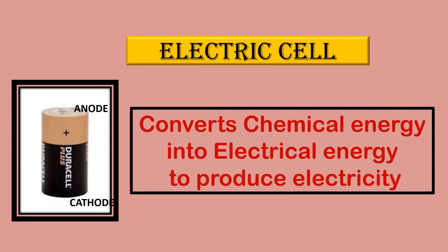Electric cell. Electric cell has two terminals, a positive terminal and a negative terminal. The positive terminal is called anode and the negative terminal is called cathode. An electric cell converts chemical energy into electrical energy to produce electricity.